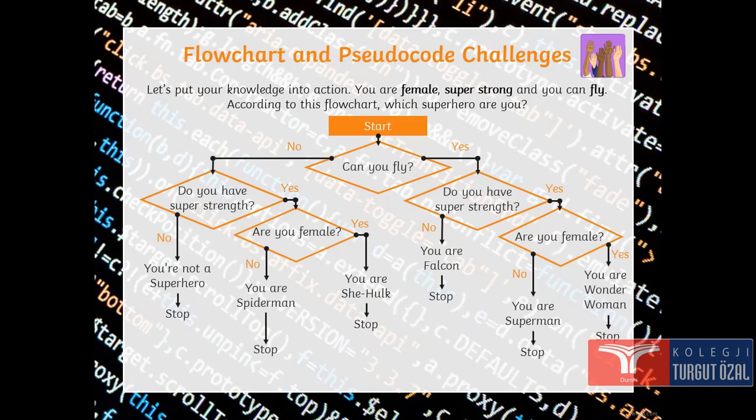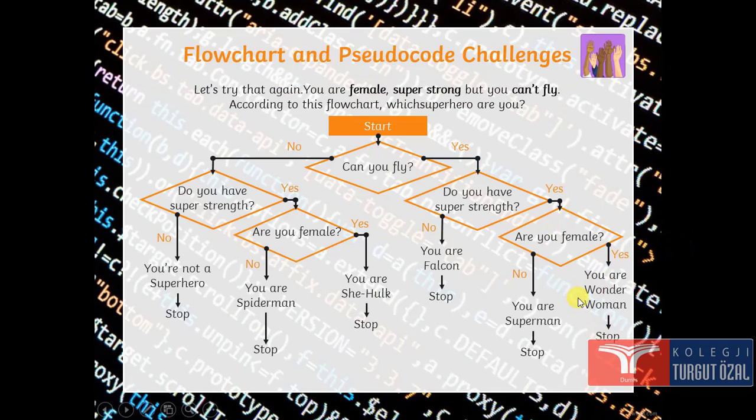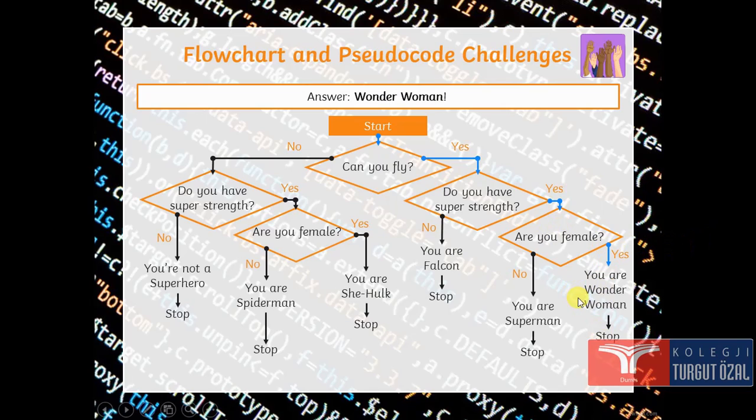Now. Challenge. Let's put your knowledge in action. You are a female. Super strong and you can fly. According to this flowchart, which superhero are you? You can fly. Can you fly? Yes, you can fly. Do you have super strength? Yes, you have super strength. Are you a female? Yes, you are a wonder woman then. This is the solution for this challenge. You are a wonder woman. You follow all these steps.